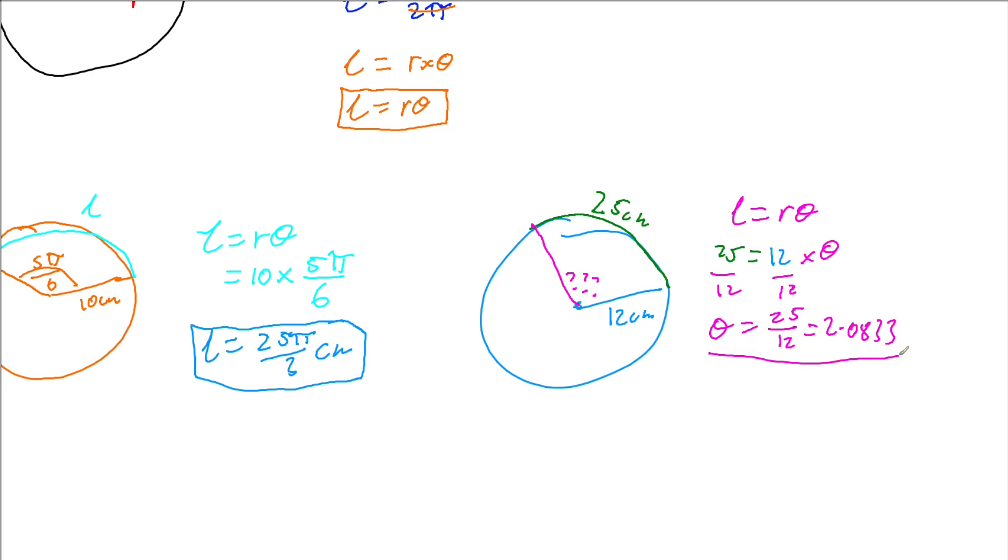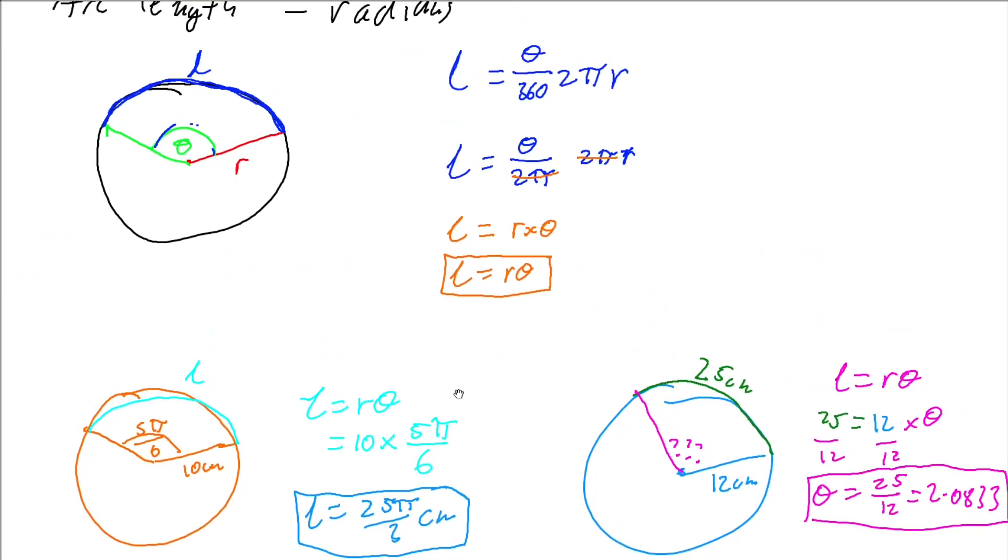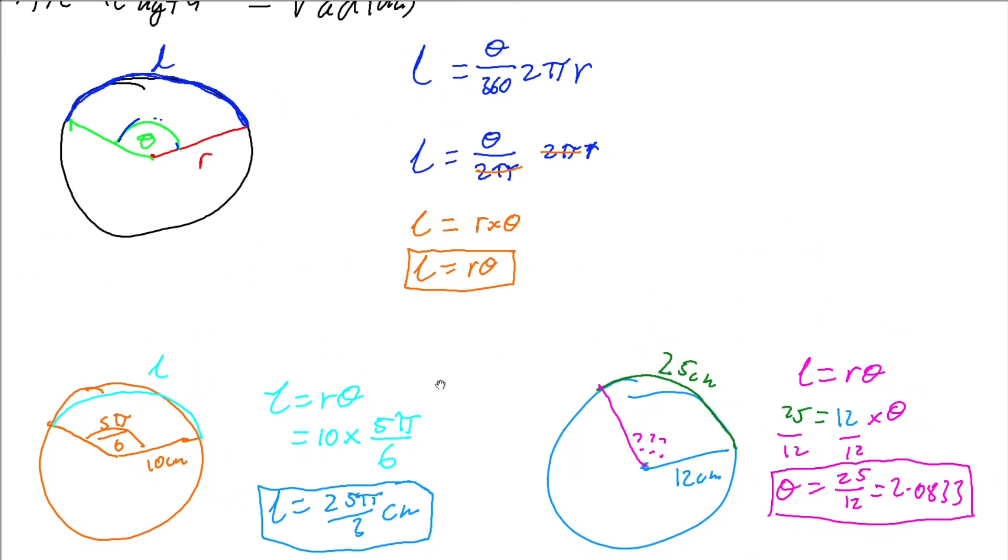That's it. Nice and quick. Radians make finding the arc length very quick and easy because all we have to do is multiply the radius times the angle that we've rotated through.